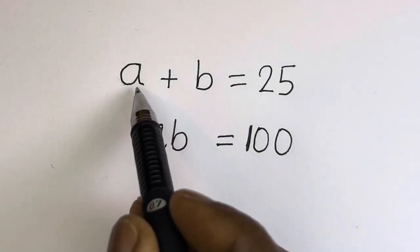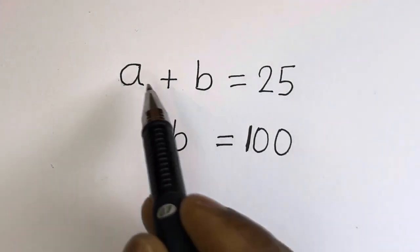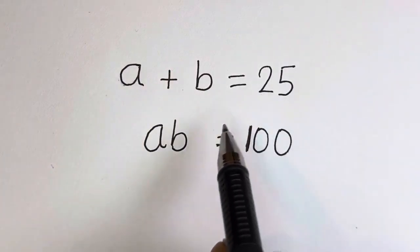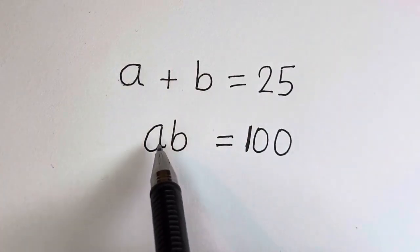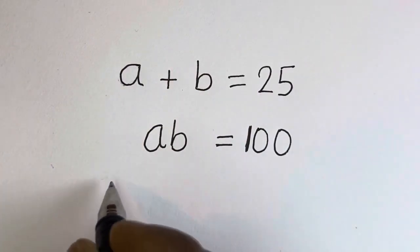Hello. How to solve for A and B in this equation: A plus B is equal to 25, and AB is equal to 100. Solution.